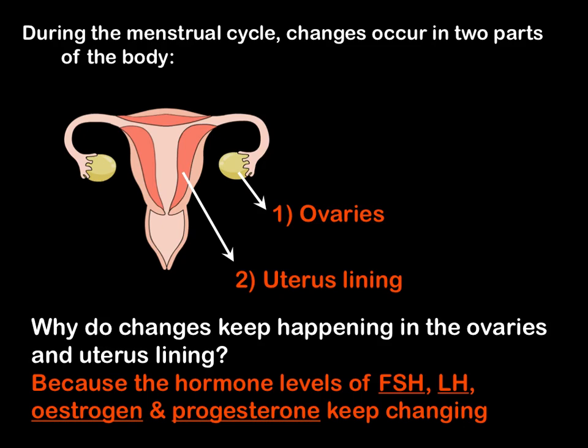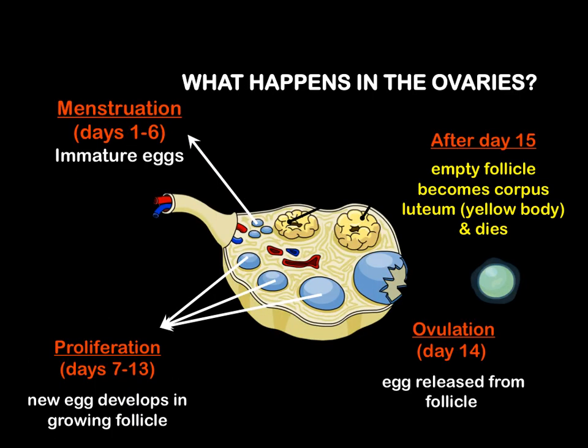Looking at what is happening in the ovaries: during menstruation, days 1 to 6, we have immature eggs inside follicles. During the proliferation period, days 7 to 13, the new egg starts to develop inside a growing follicle. At ovulation on day 14, the egg is released from inside its follicle — the follicle has grown and then bursts open, releasing the egg. After day 14, from day 15 onwards, the empty follicle becomes a corpus luteum — a yellow body — and then dies, having gone through its life cycle.